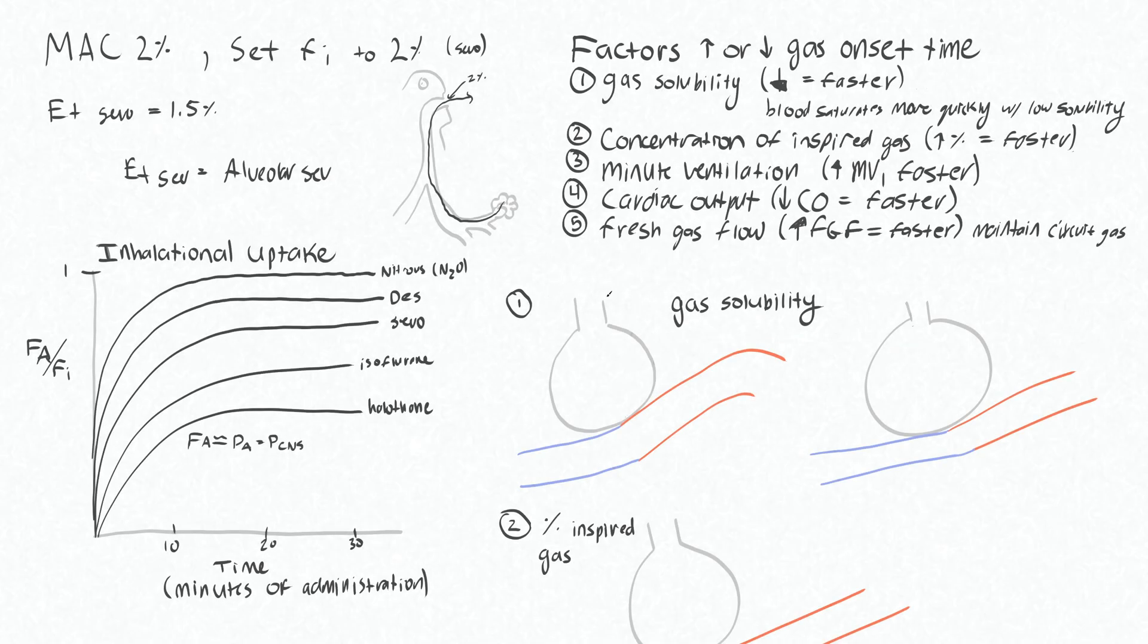Let me start by showing you this effect of gas solubility for onset time. So let's take Sevoflurane, we'll make this Sivo that we're giving, and it has a blood gas partition coefficient of 0.65 to 1. So there will be 0.65 particles dissolved in your blood for every one particle in the gas phase in your alveoli.